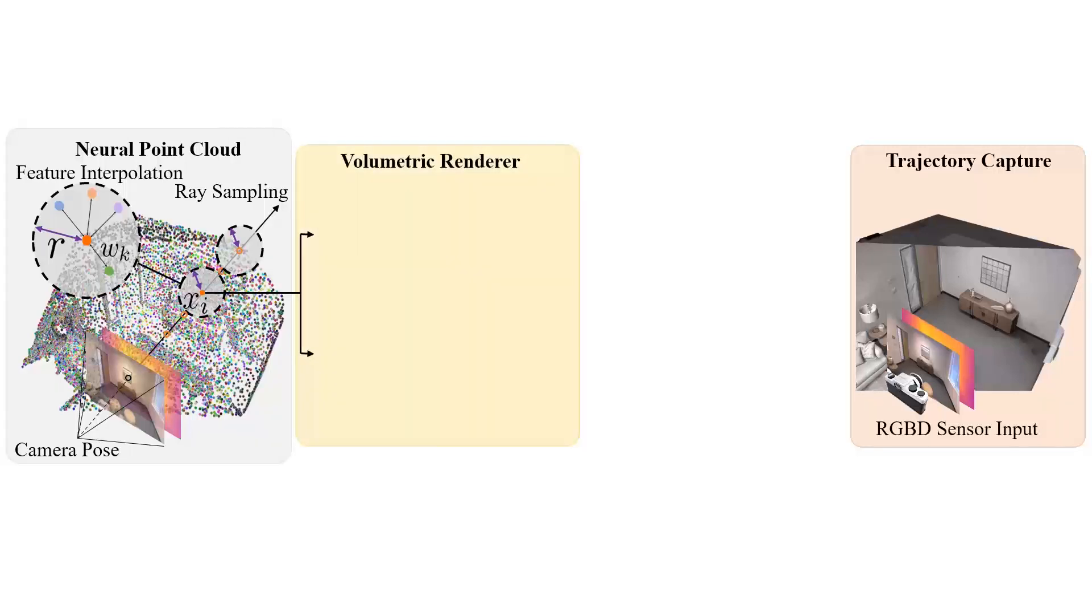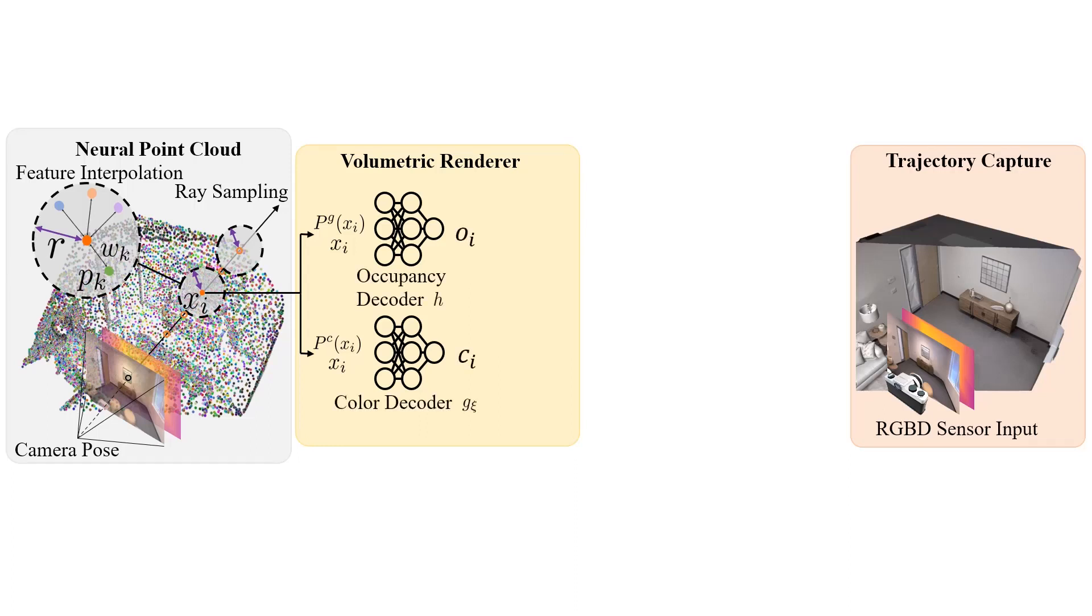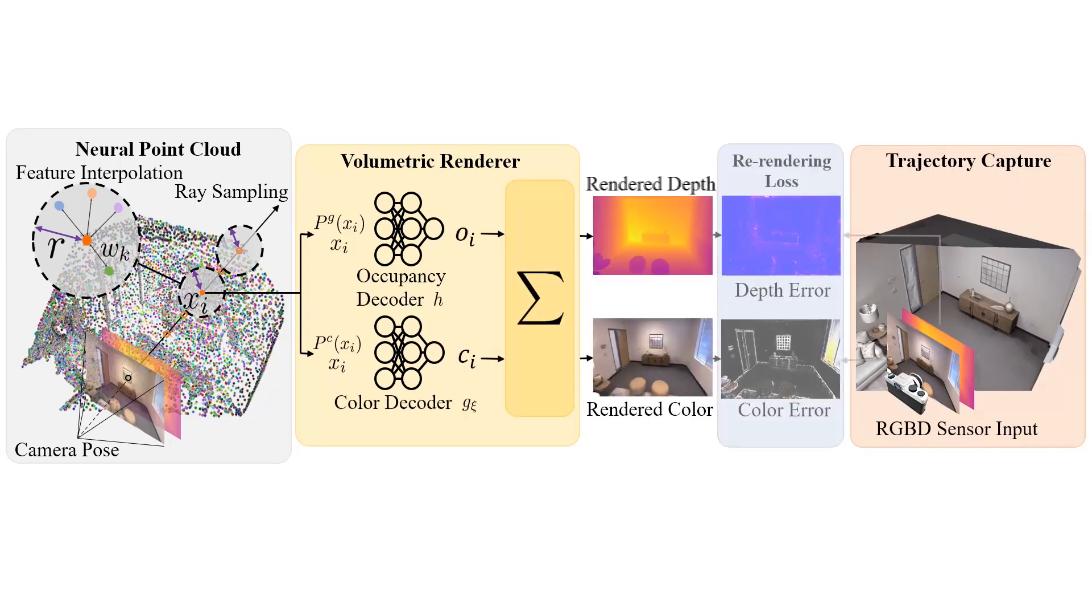To render depth and color, we use a volumetric renderer. The volumetric renderer decodes the color and geometric features into occupancies and RGB values along the ray. Finally, we impose a depth and color loss to the sensor input.